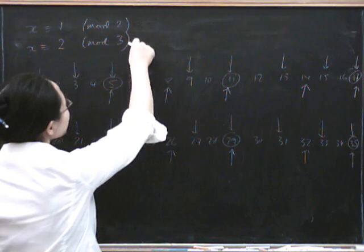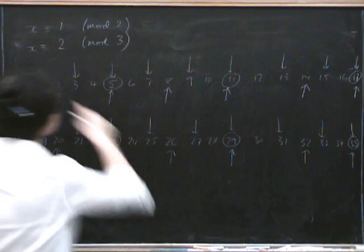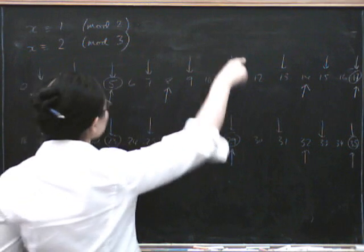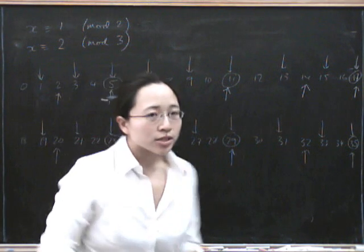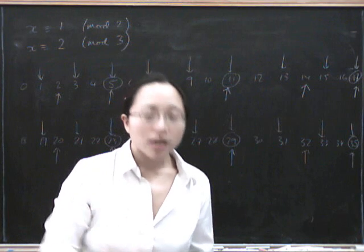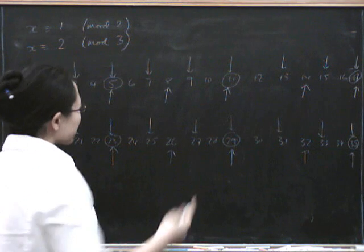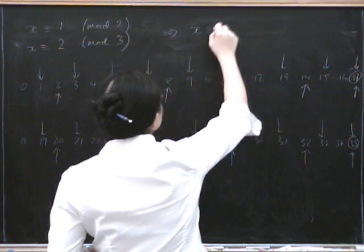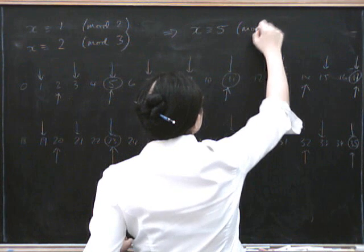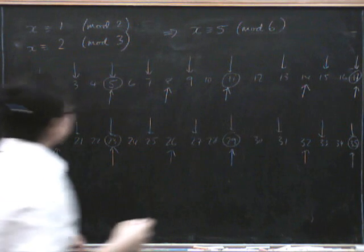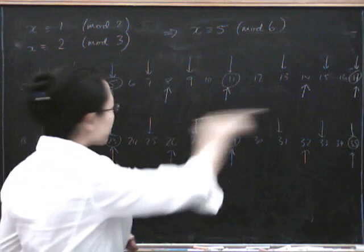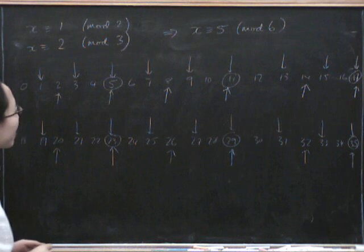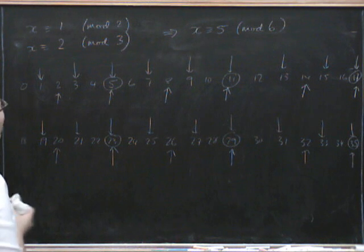And 6 happens to be 2 times 3. This makes sense, because the top solutions occur every 2 numbers, and the bottom ones occur every 3 numbers. So how often are they both going to occur at the same time? That's going to be every 6. So the solution to this is x is congruent to 5 mod 6, because each of these circled solutions is congruent to 5 mod 6. Now let's see if we can do that with another one.